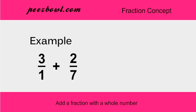Now, we need to perform addition of both fractions, which are 3 upon 1 and 2 upon 7. To perform addition of fractions where both fractions have different numerator and different denominator, we perform the following steps.